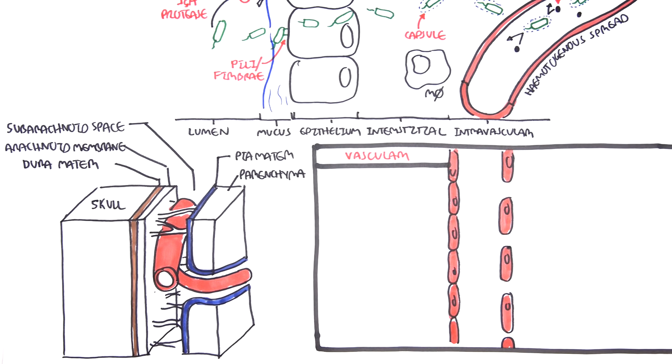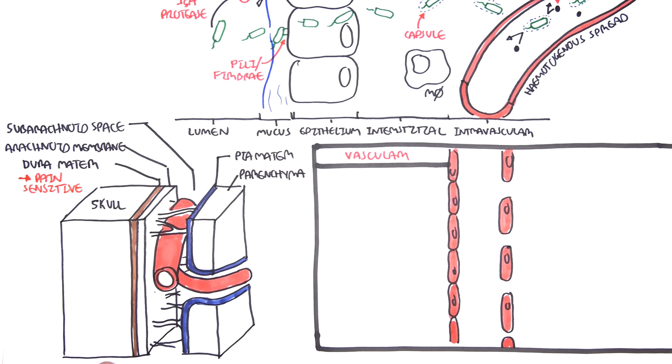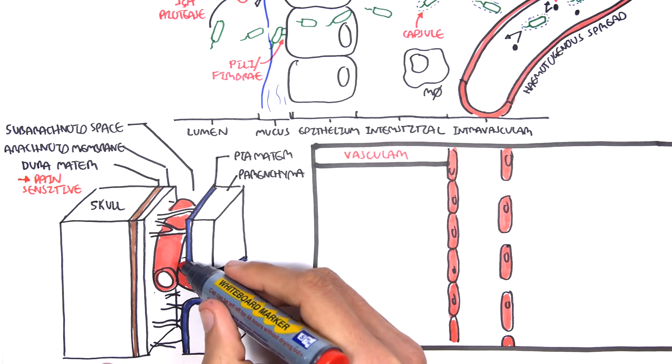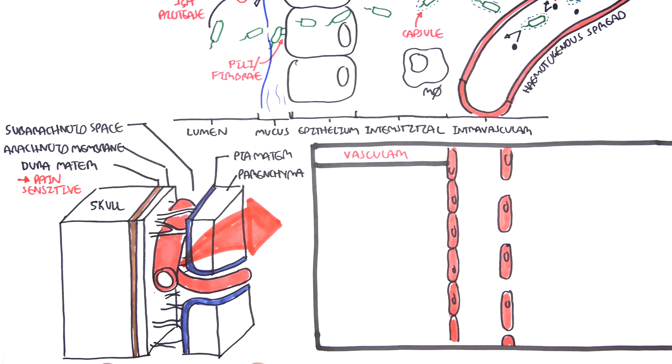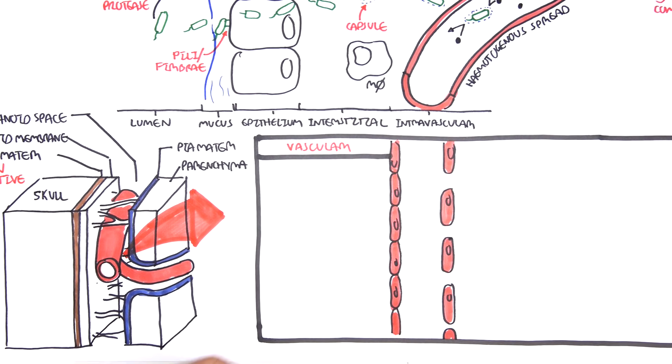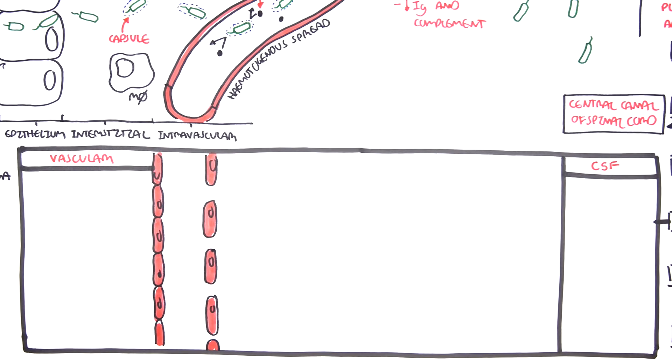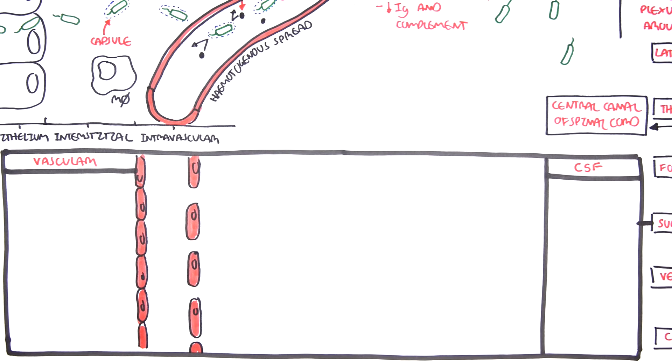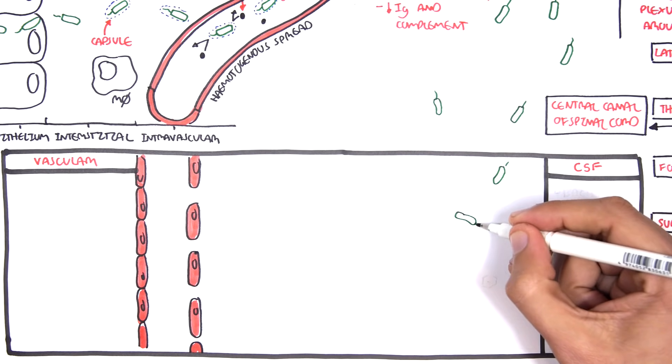The meninges are pain sensitive, particularly the dura mater. Let us now zoom and focus on this area again, the subarachnoid space. In this diagram on the left side you have the vasculature, the circulation in the arachnoid space. And then on the right you have where the cerebrospinal fluid is traveling and where bacteria are right now.